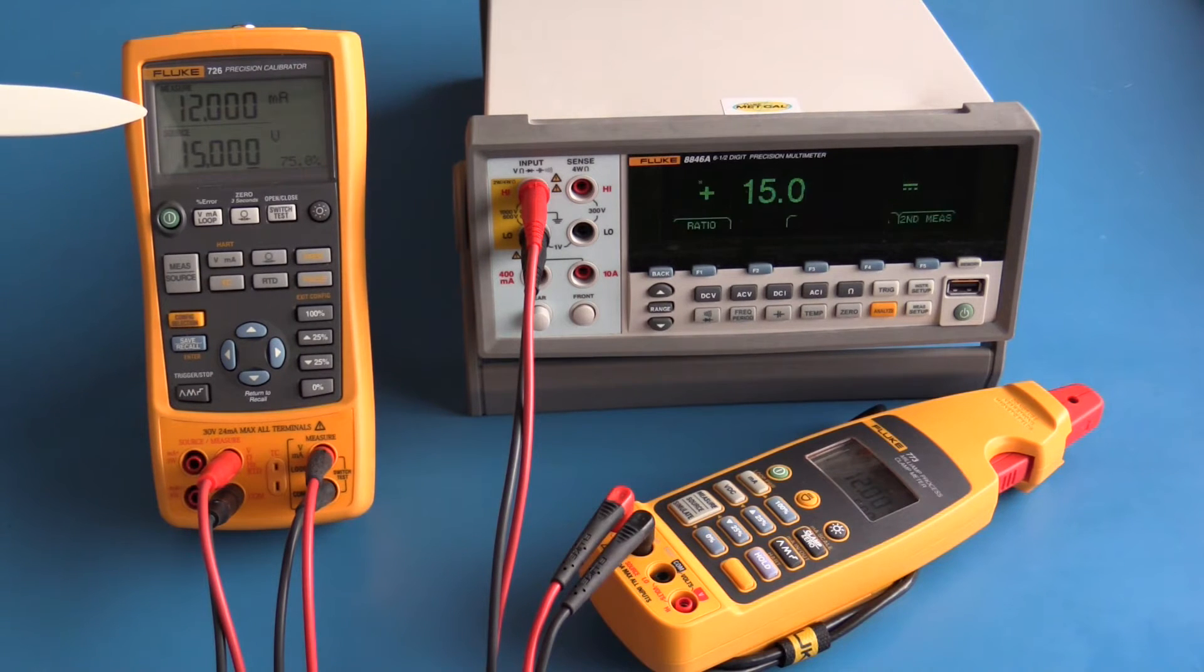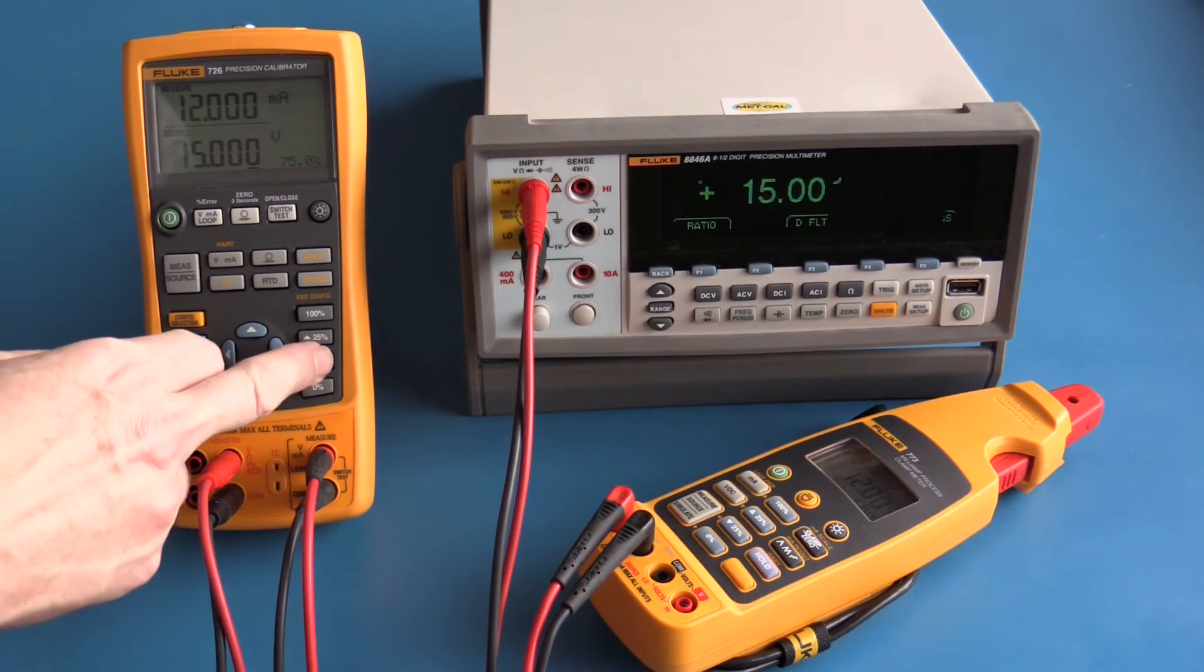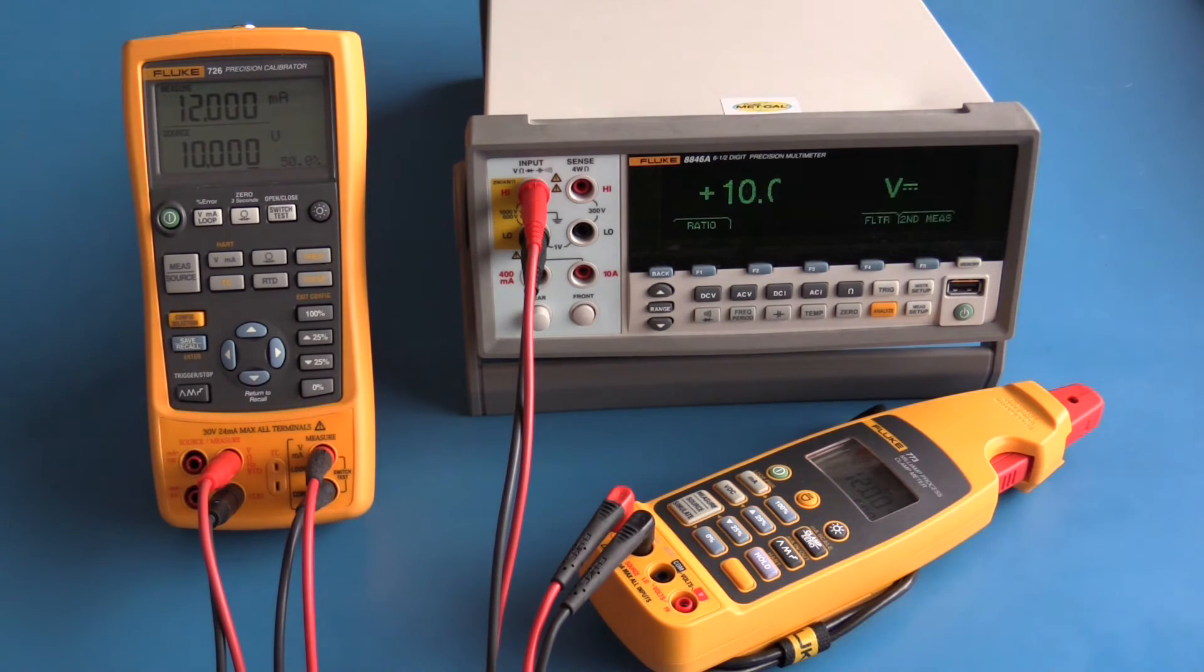The Fluke 726 is able to source up to 20 volts. It can also power a 24 volt transmitter. To change the voltage being sourced, I can go up and down in 25 percent steps. So that's 10 volts, for example. You can see we're reading pretty close to 10 volts on the Fluke 8846a within the allowable range.